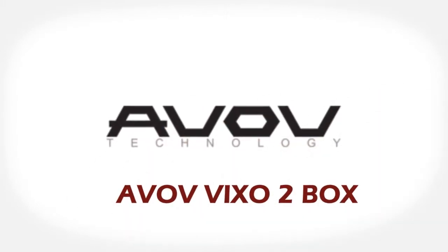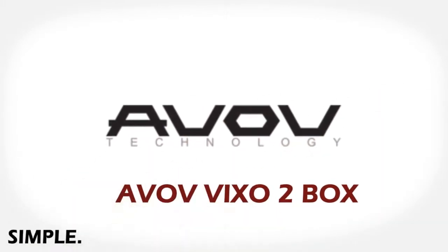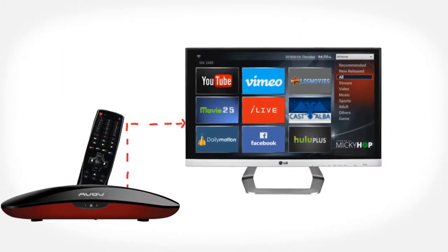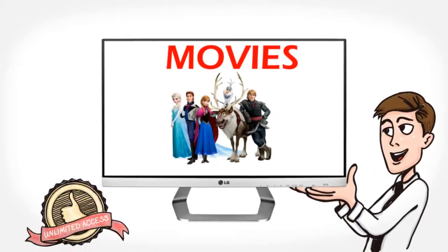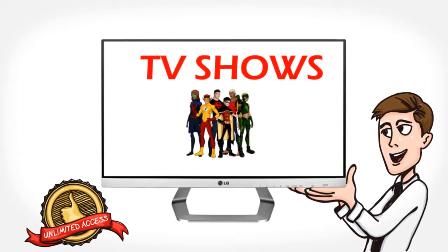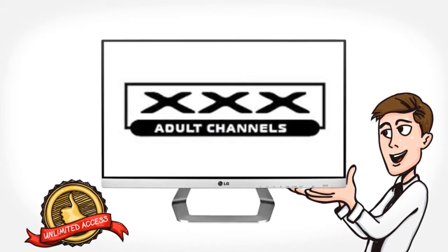Introducing AVOV VIXO2BOX. The VIXO2BOX is a simple, easy-to-use, cutting-edge Android box you can attach to your television instantly. It will enable you to slash 70% off your cable bill and get access to unlimited movies, TV shows, games, apps, and even adult TV on demand.